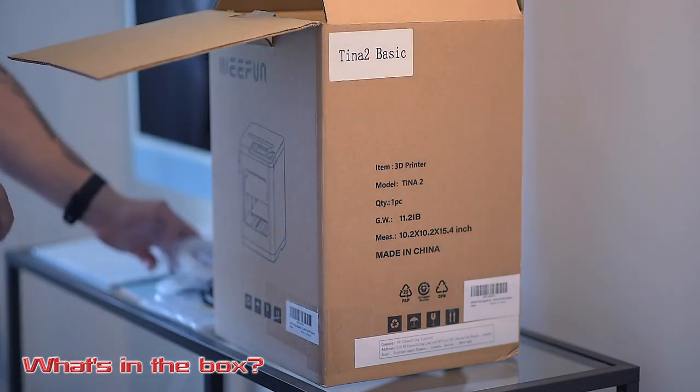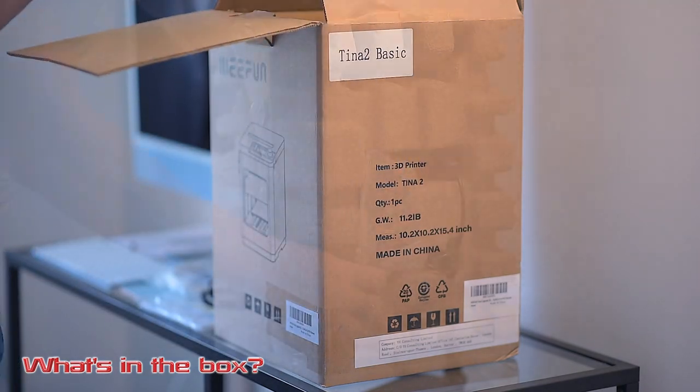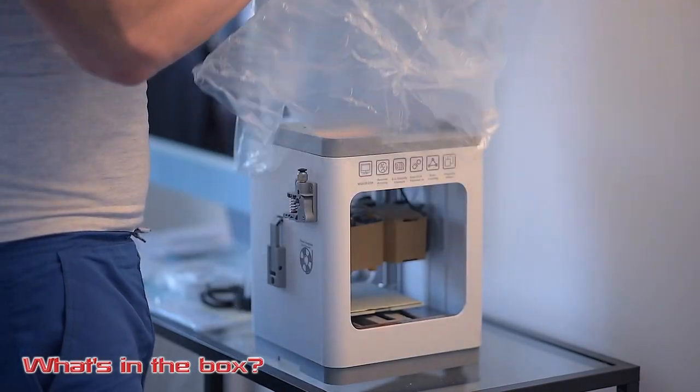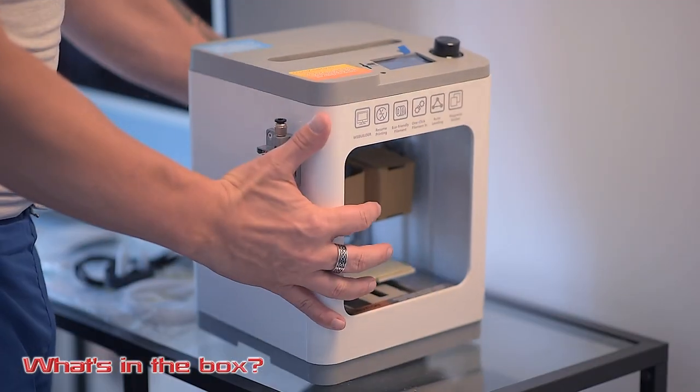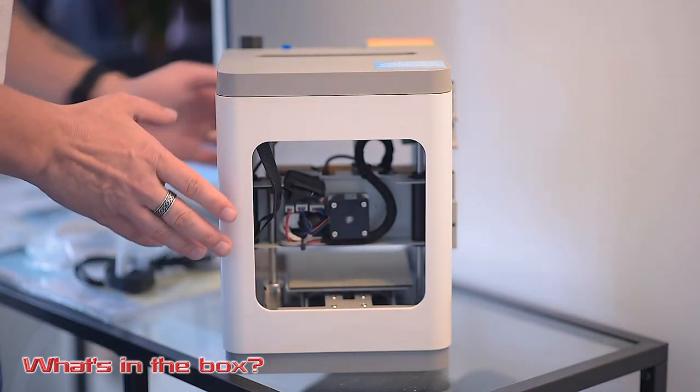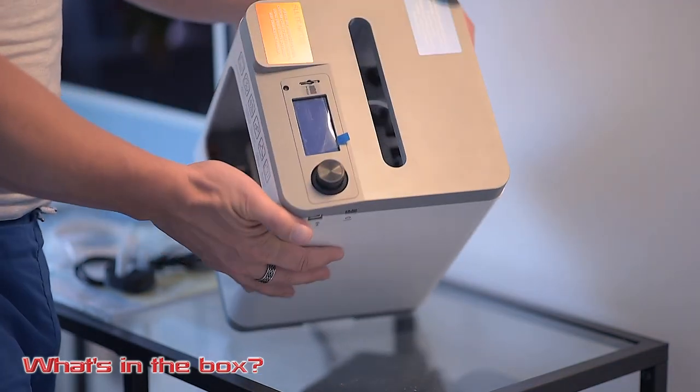The first thing you'll find is accessories such as the power lead, one spool of PLA filament, a spare extruder nozzle with tools, micro SD card with some basic 3D slicing software called WE Builder, as well as some test 3D models which are ready to be printed out.